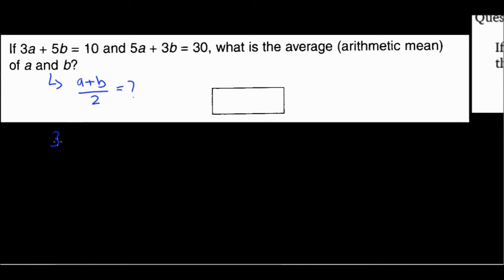And they have given me two equations, 3a plus 5b equals 10, 5a plus 3b equals 30. Now I can do them simultaneously. Let's say I add the two equations.